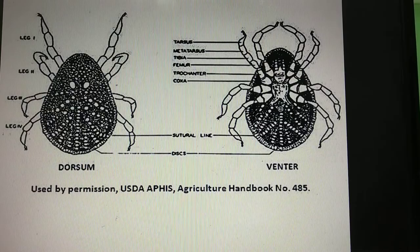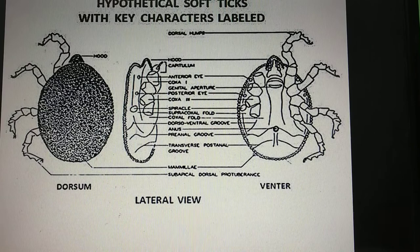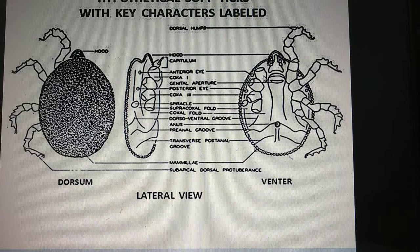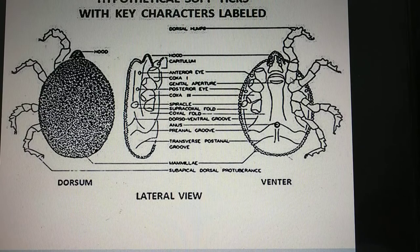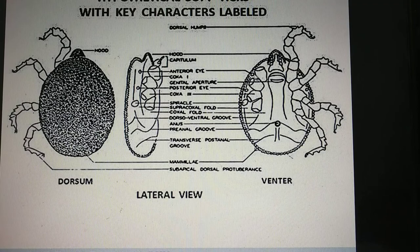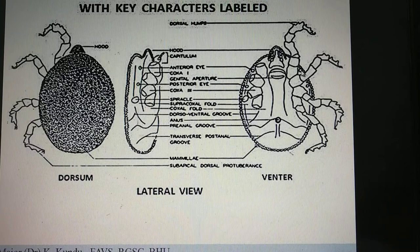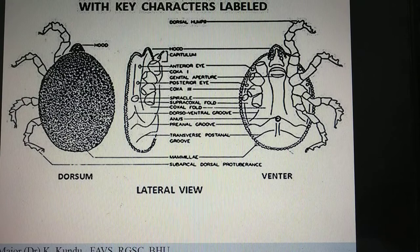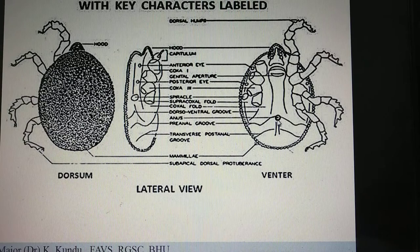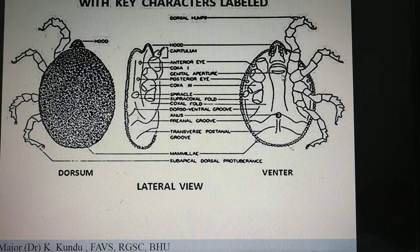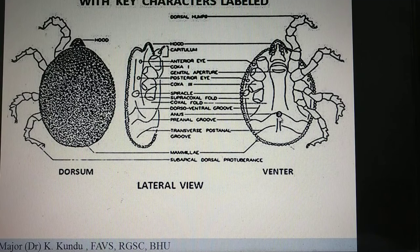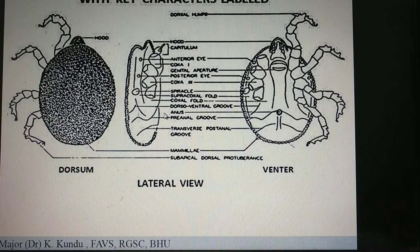Looking at further details on the ventral aspect: you can see the coxa of the first leg and coxa of the second leg. Just posterior to the first coxa and posterolateral to the second coxa, you can see circular structures — these are the eyes. There is a first eye and second eye on either side. There is an anal opening in the posterior aspect, and the genital pore is located in the anterior half in the midline.